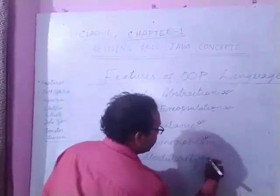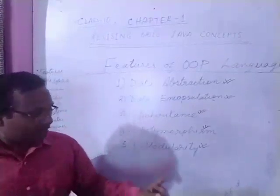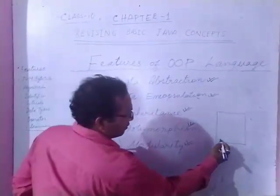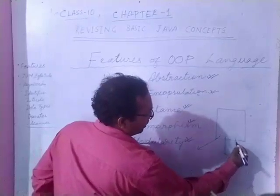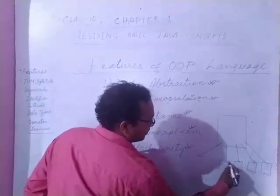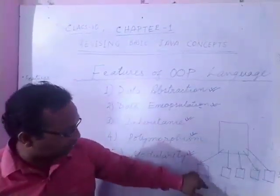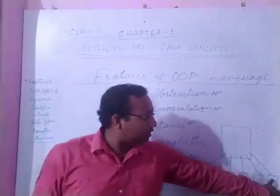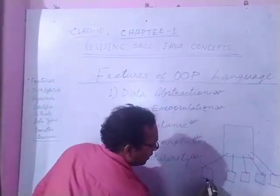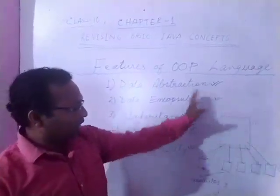Next term is Modularity. Modularity means dividing a big program into smaller sub-programs. For example, I will divide a program into five smaller units. This is the main program, and these are the sub-programs: sub-program 1, sub-program 2, sub-program 3, sub-program 4, sub-program 5. These individual sub-programs are given the name as modules, and this whole process is known as modularity.